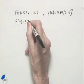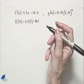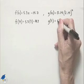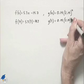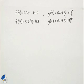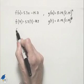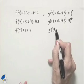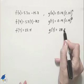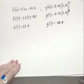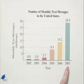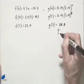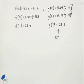For the linear function, f of 7 equals 5.3 times 7 minus 14.7, which gives us 22.4. For the exponential function, g of 7 equals 0.14 times 2.14 to the 7th power, which gives us 28.8. Looking back at our actual chart, in 2007 we had a value of 28.9. So we can see that the exponential function is a better estimate, which corresponds to what we noticed when we looked at the shape of the graphs.